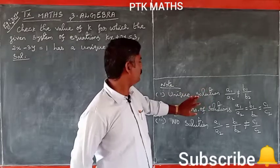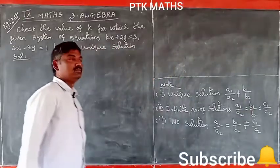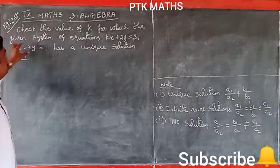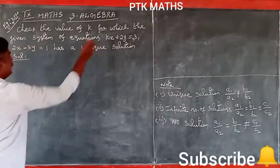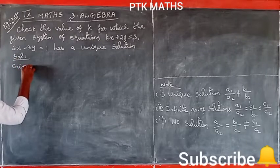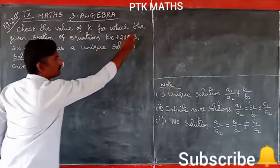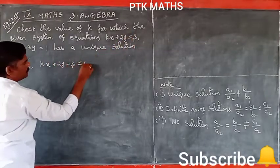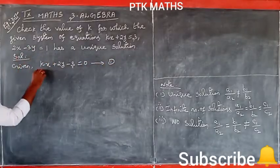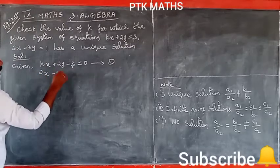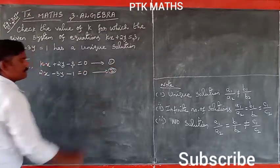Here we have a unique solution condition to apply. The equations in standard form are: kx plus 2y plus 3 equals 0 — this is equation number 1. Next, 2x minus 3y plus 1 equals 0 — this is equation number 2.